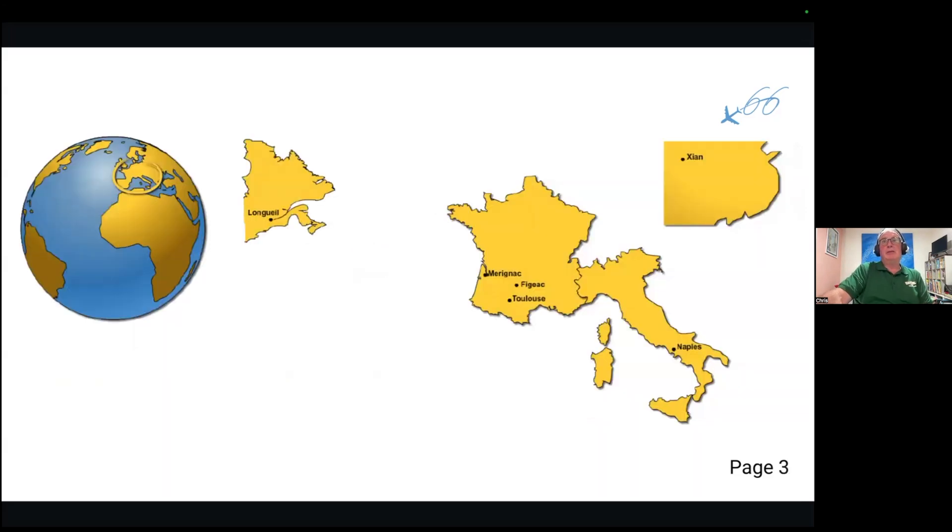The majority of the parts are built in Europe, with a few parts manufactured in Longueuil in Canada, as well as Xi'an in China. Merignac, for those who are wondering, is the airport at Bordeaux, which is on the west coast of France. Xi'an manufactures parts, and Toulouse, as well as Leonardo plant in Naples, put the parts together on dedicated production lines.